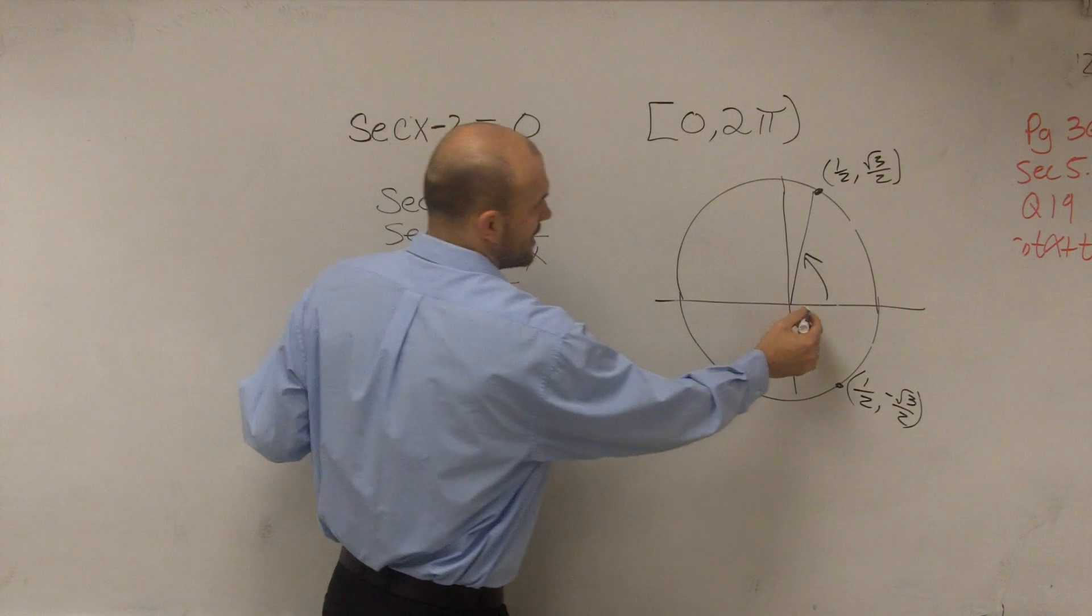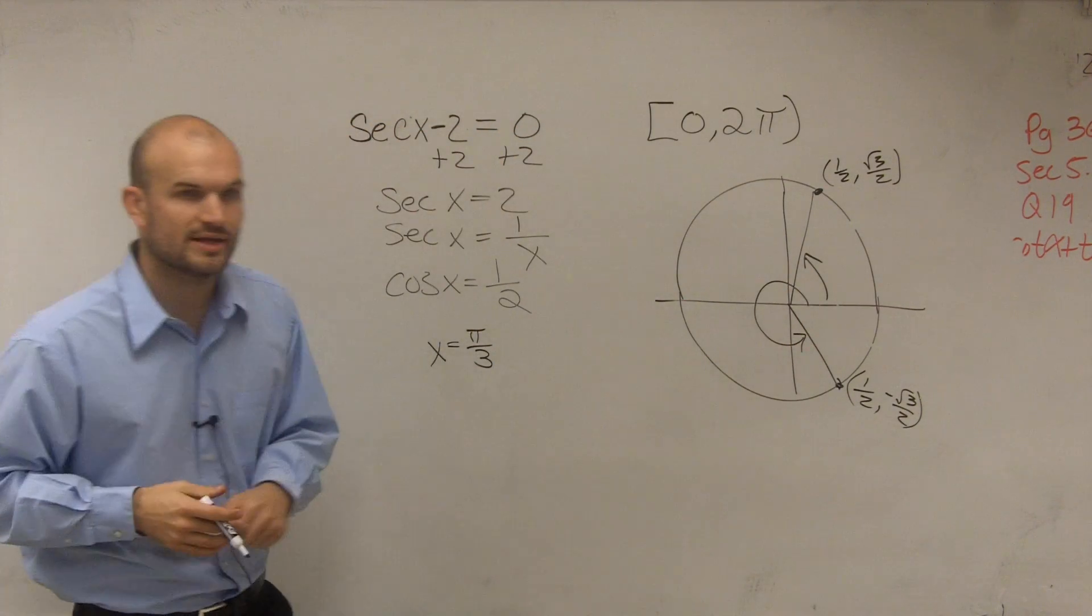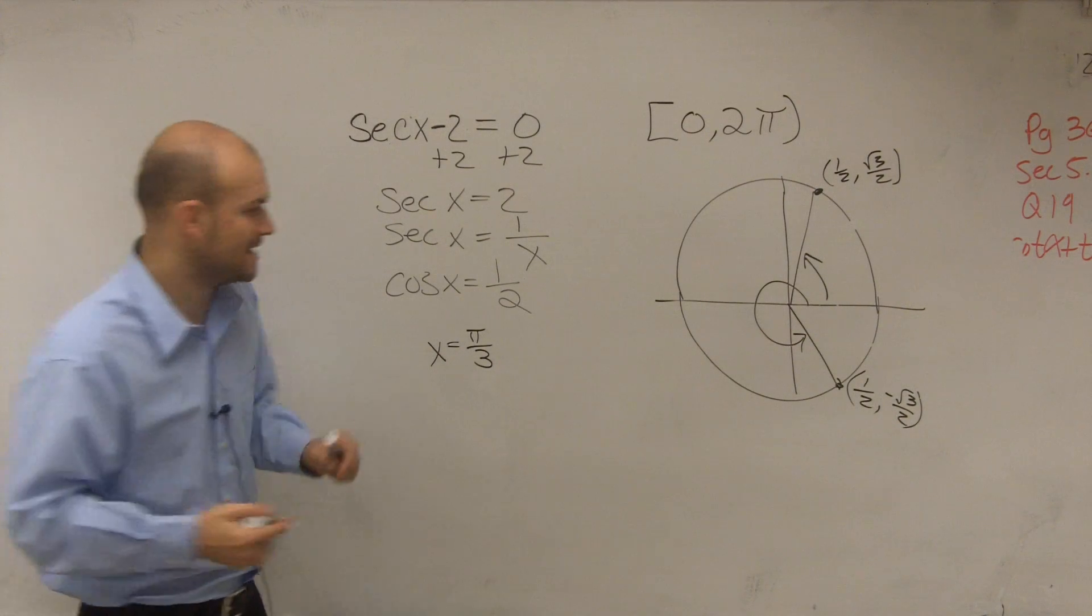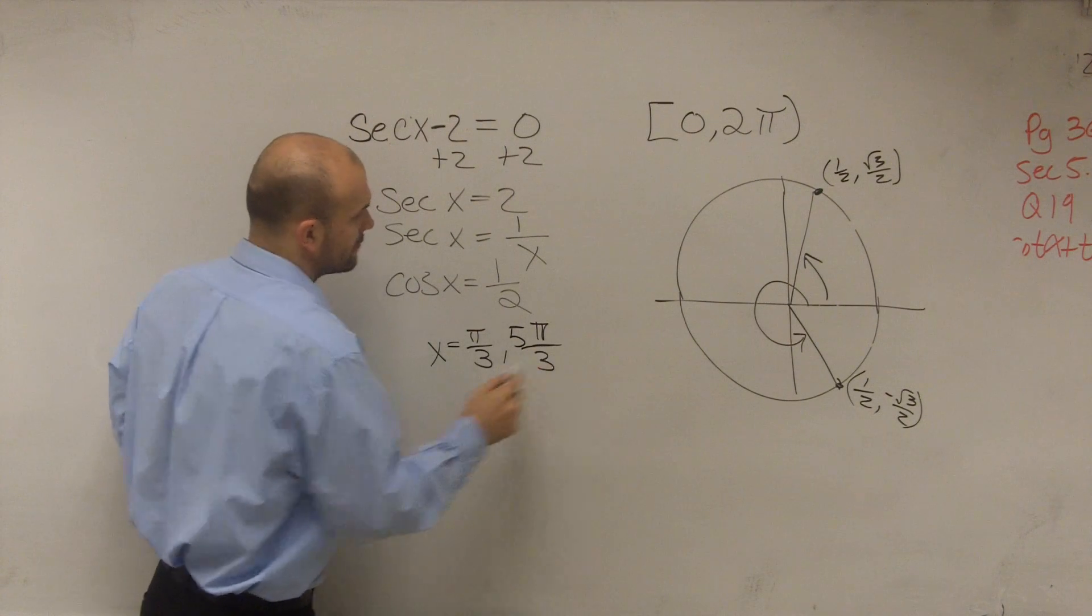And then there's this other angle right there, which by going back through your unit circle is 5π over 3.